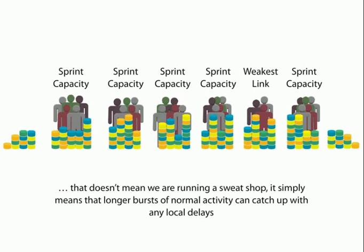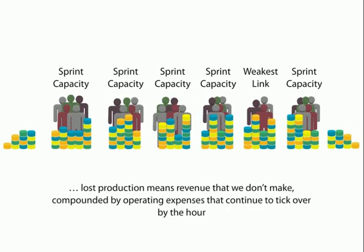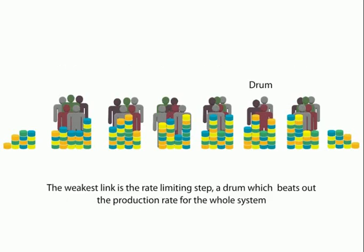It simply means that the people with sprint capacity have a longer ability to produce than the weakest link. In other words, a longer burst of normal activity can catch up with any local delays at the sprint capacity resource. However, any delay or blockage on the bottleneck is production loss for good. If we have any loss due to any reason at the weakest resource, it's a loss for the system — it cannot be made up. Loss of production means revenue that we don't make, compounded by operating expenses that continue by the hour, making it quite damaging.